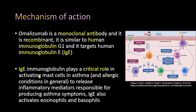Omalizumab works by targeting human immunoglobulin E, which is IgE. The IgE plays a critical role in activating mast cells in asthma and allergic conditions in general. IgE works to activate mast cells to release inflammatory mediators responsible for producing asthma symptoms such as bronchoconstriction.